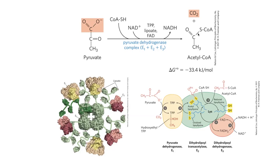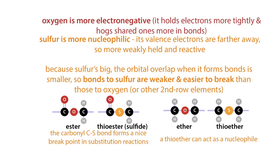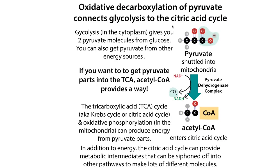Bonds to sulfur are easier to break than bonds to oxygen. So if you make a sulfur linkage to something, that gives you a kind of swappage point. This is what we're doing when we form acetyl-CoA — not only are we decarboxylating it, but we're introducing a handle onto it. This handle makes it easier to attack the carbonyl carbon, easier to attach it to another molecule, and it stores energy in this bond.